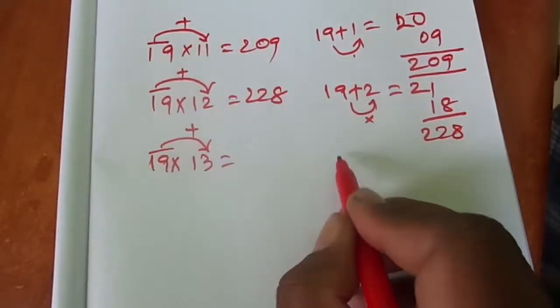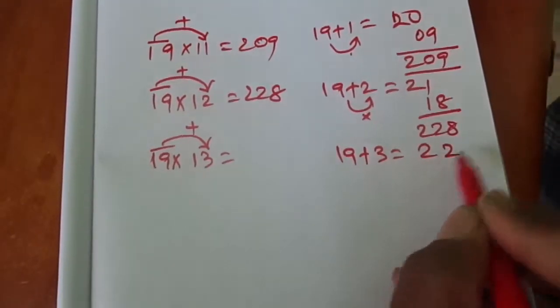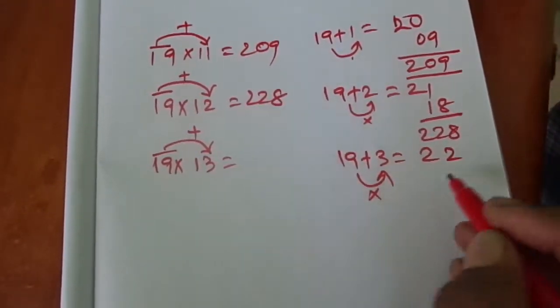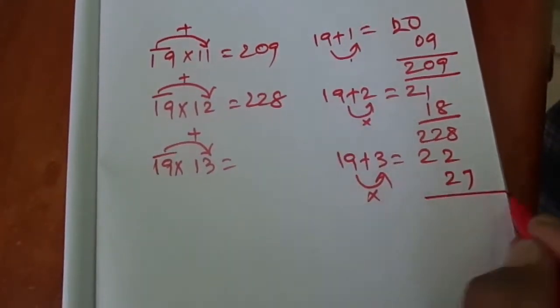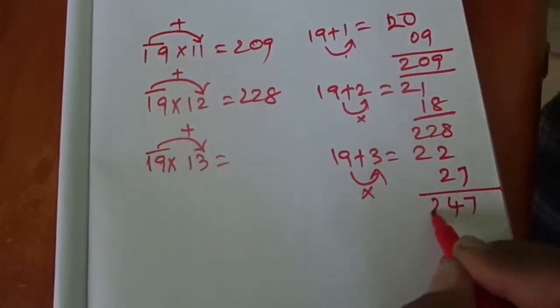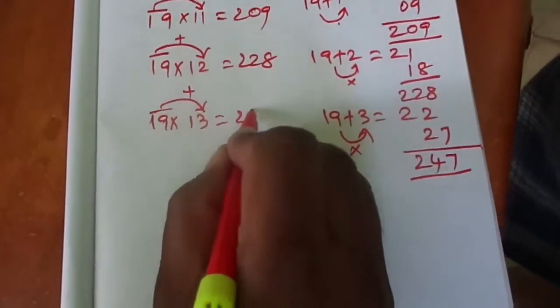19 × 13: 19 plus 3, answer is 22. 9 multiplied by 3 is 27. 22 plus 27, you get 247.